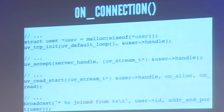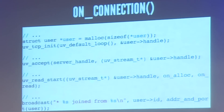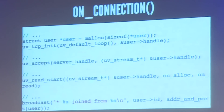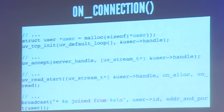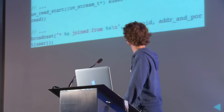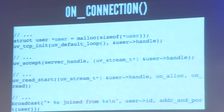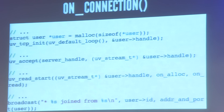The onConnection callback: when it gets called, it means there is a new connection pending from a user. So we allocate a little bit of memory to maintain state, create a handle for the client, accept the new connection. Then we tell libuv to start listening for incoming data. And finally, we broadcast to all users that there's a new user.